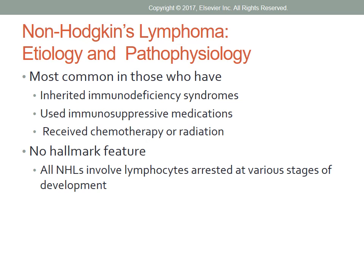Environmental factors linked to non-Hodgkin's lymphoma include chemicals such as pesticides, herbicides, solvents, organic chemicals, and wood preservatives. Non-Hodgkin's lymphoma is also more common in individuals who have inherited immunodeficiency syndromes, who have used immunosuppressive medications to prevent organ transplant rejection or treat autoimmune disorders, or who have received chemotherapy or radiation therapy. There is no hallmark feature for non-Hodgkin's lymphoma parallel to the Reed-Sternberg cells of Hodgkin's lymphoma.